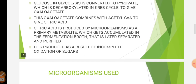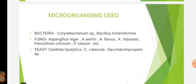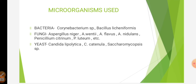Next we see the microorganisms that are involved in the production of citric acid. The bacteria that are used include Corynebacterium species, Bacillus licheniformis, Arthrobacter paraffinans, etc. The fungi that are used include Aspergillus niger, Aspergillus wentii, Aspergillus clavatus, Aspergillus nidulans, Penicillium citrinum, Penicillium luteum, and many more. Among these, Aspergillus niger is the most widely used fungus for citric acid production.